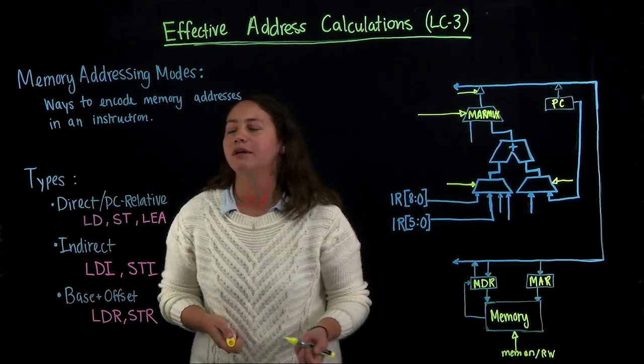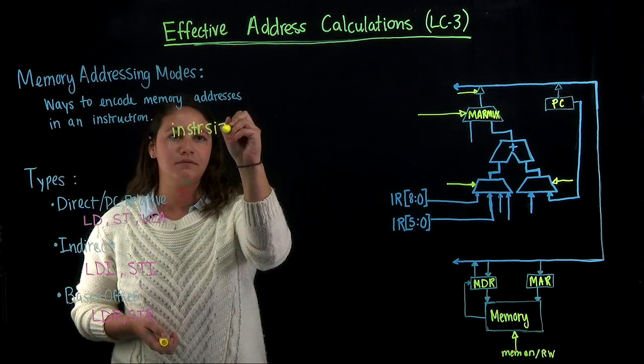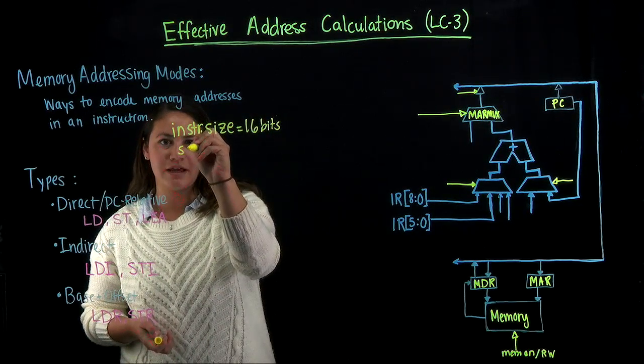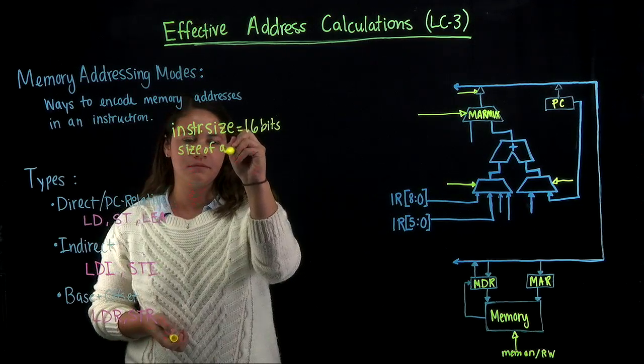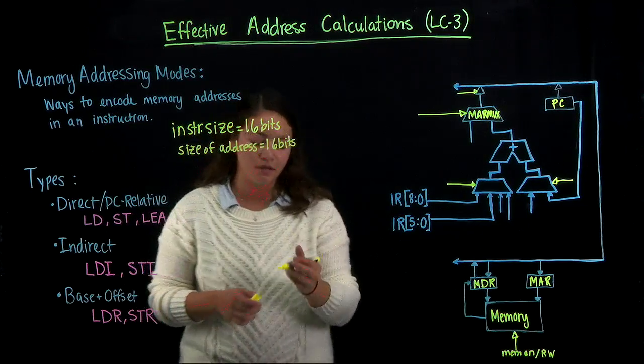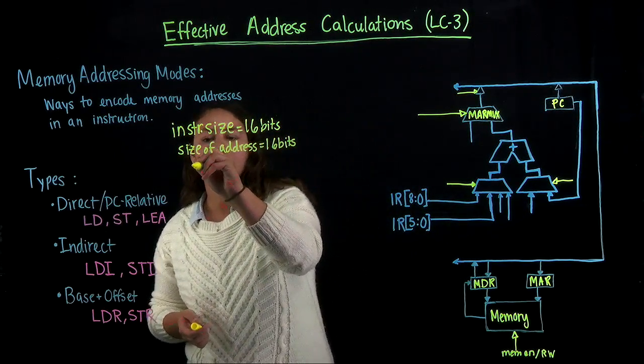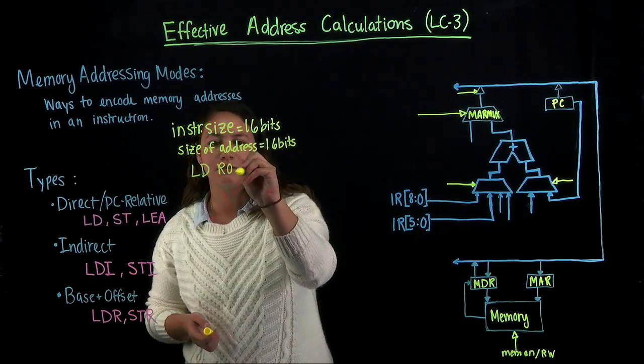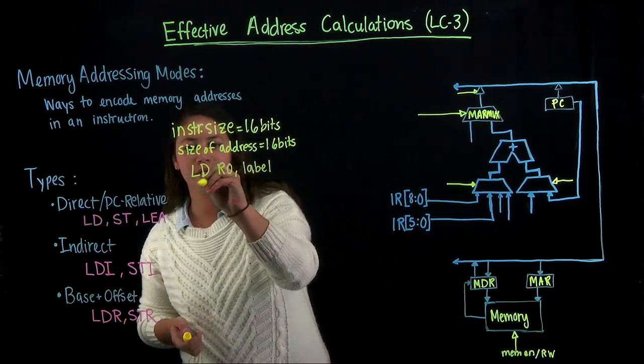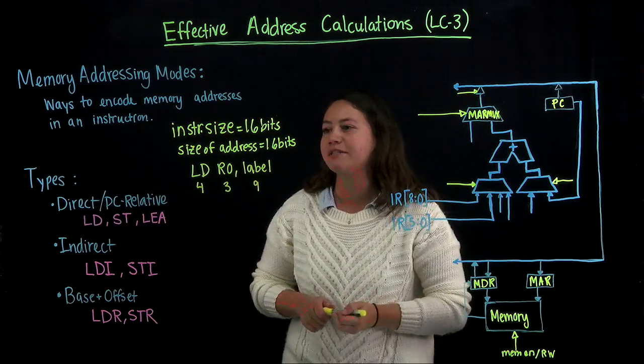So this is necessary to do, because in the LC3, the instruction size is 16 bits, and the size of an address is also 16 bits. So if we wanted to have an instruction that would maybe like load some data from memory into a register, we would need four bits for the opcode, three for the register, and we would have only nine left to express the address.